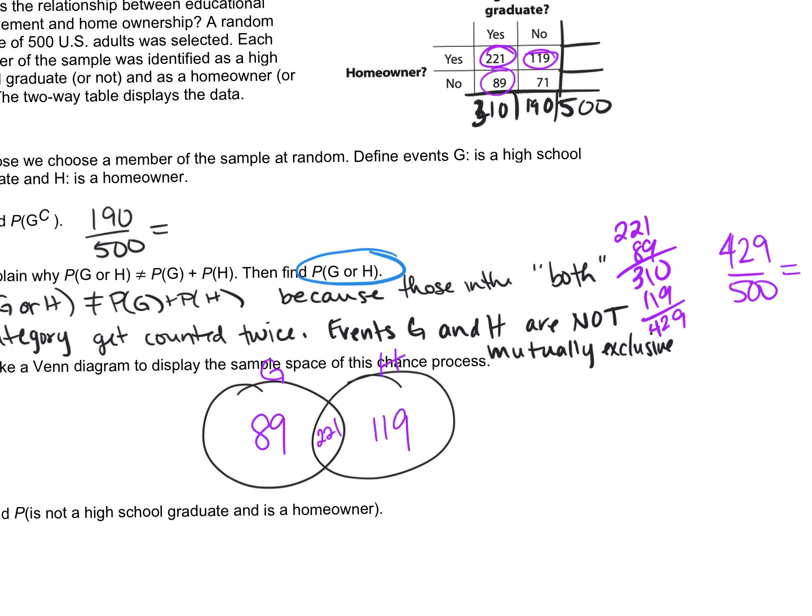So another way to actually find the probability of or, and 71 is the outside, everything that's not in the circles, is to add up, make the Venn diagram and then add up these numbers. That's the same thing we did here. So the Venn diagram can be a tool to help us.